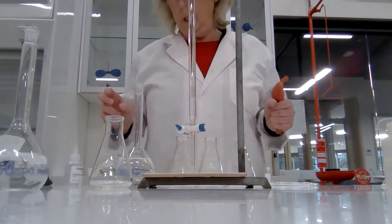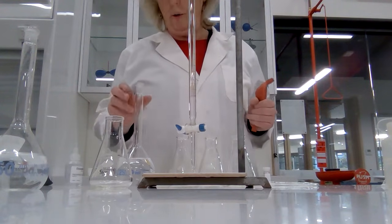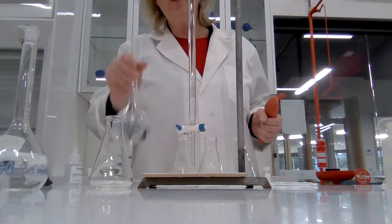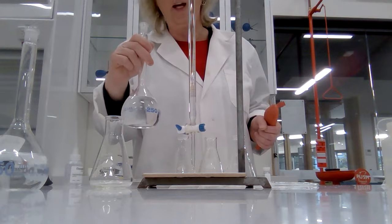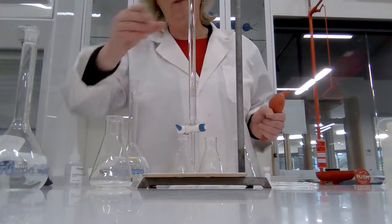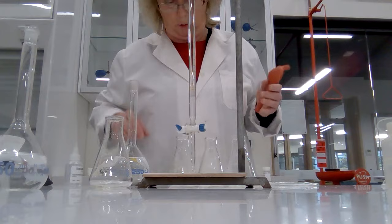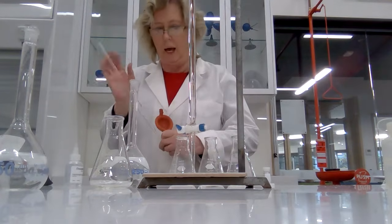We are going to do the titration of oxalic acid, which is here in this standard solution in a volumetric flask. We're titrating it with sodium hydroxide solution which is in the burette. I'm just going to add one more pipette full of oxalic acid to my third conical flask.